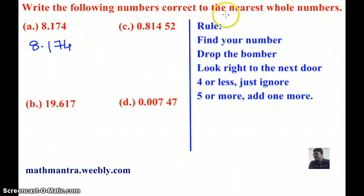Now in this question, we are going to write the number correct to the nearest whole number. So my number is actually the whole part of the decimal number. In this case, it is 8.